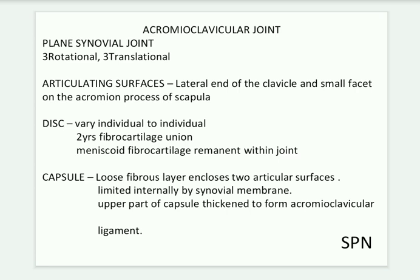We need to cover the basic anatomy before writing the biomechanics of any joint. The articulating surfaces are the lateral end of the clavicle and a small facet on the acromion process of the scapula. The disc varies from person to person, with two ears of fibrocartilage uniting and a meniscoid fibrocartilage remnant within the joint. The capsule is a loose fibrous layer enclosing the two articular surfaces.